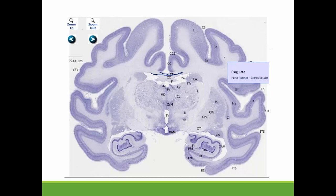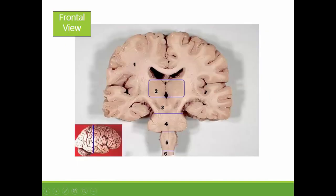Underneath here, we have the third ventricle. We can also see it really clearly in this diagram of the brain where those cavities are where we would have the fluid — those are the two lateral ventricles and here we have the third ventricle. Because this is cut from the frontal view, we cannot see the fourth ventricle.